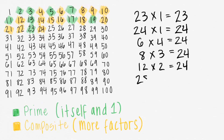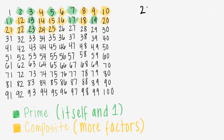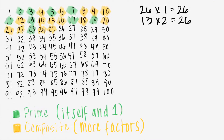25 times 1 equals 25. 5 times 5 also equals 25, so 25 is composite. 26 times 1 equals 26, but 13 times 2 is also 26. That means that 26 is composite.